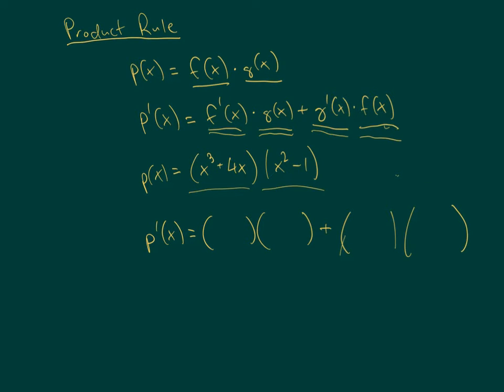So what they would look like is this. f prime is going to be 3x squared plus 4. Then g of x is just x squared minus 1, left alone. Then I take the derivative of g, which is 2x, and then I leave f of x alone and put x cubed plus 4x there. And that's your product rule.